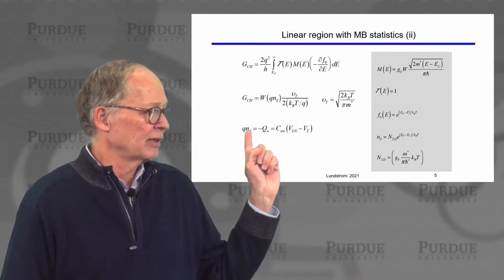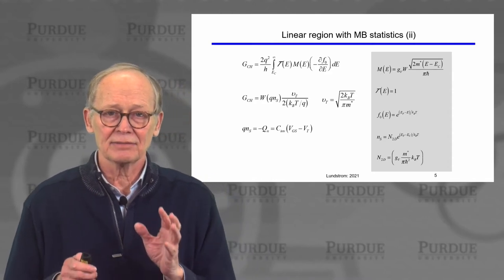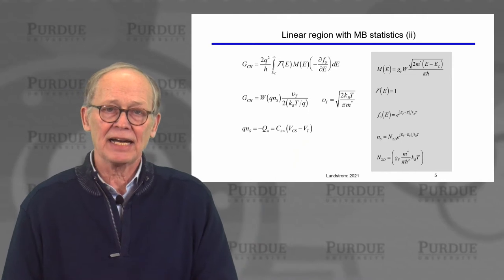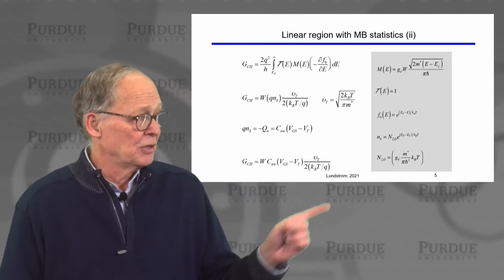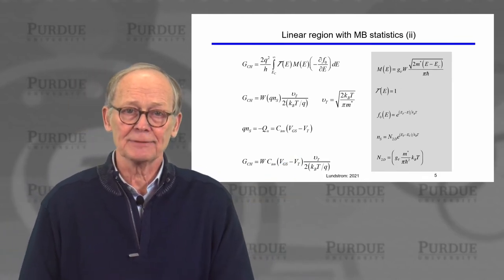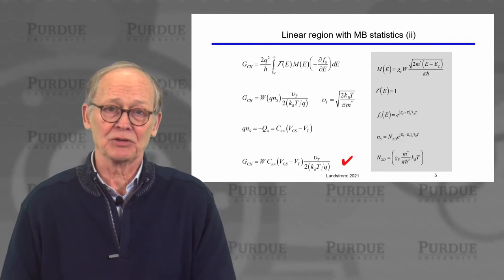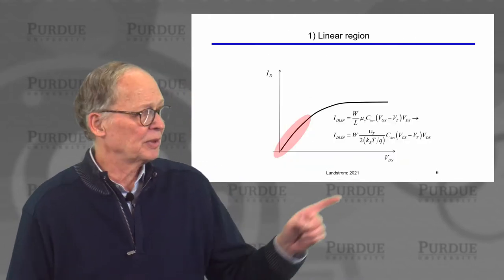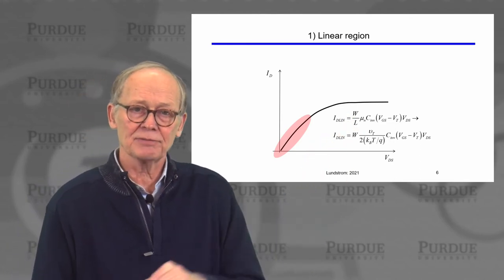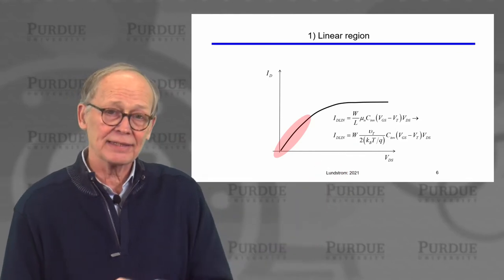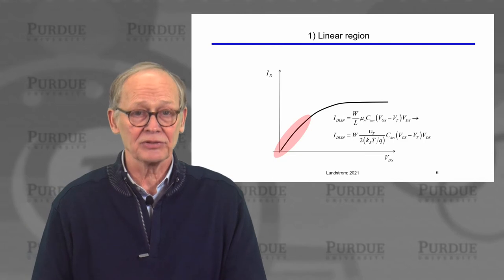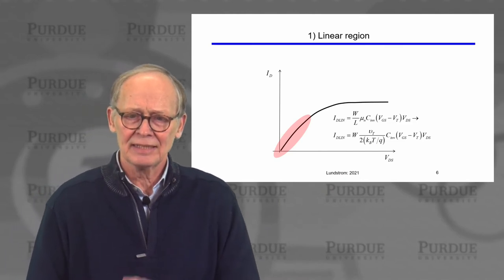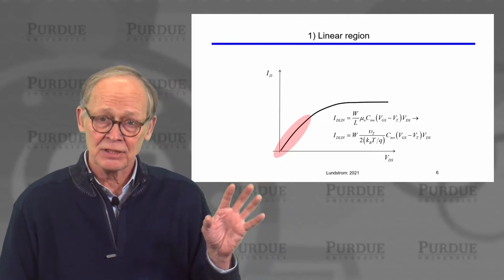Also, q times the sheet electron density is just minus the mobile charge in the channel of this MOSFET, and we can write that as C_ox times (V_g minus V_t). So we have an expression for the conductance. We have now described the linear region current of this ballistic MOSFET. We've taken the traditional expression for the linear region current, and we now have the corresponding expression for the ballistic MOSFET. It looks quite different, but we can show that we can make it look very similar to the traditional expression.